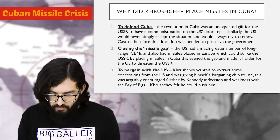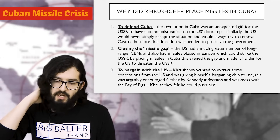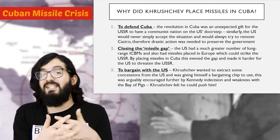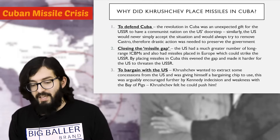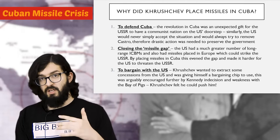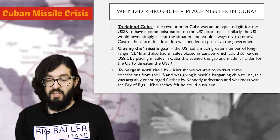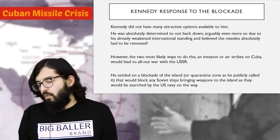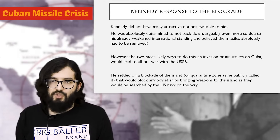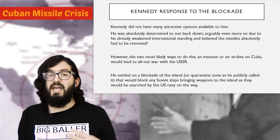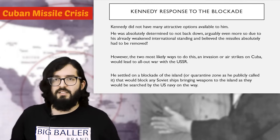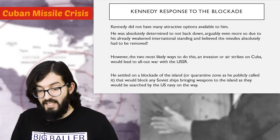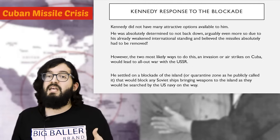The third reason is that Khrushchev wanted to bargain with the USA — to extract concessions by giving himself a bargaining chip. This was arguably encouraged by Kennedy's apparent weakness after the Bay of Pigs incident: Khrushchev thought Kennedy was weak and could be pushed around. When Kennedy finds out about the missiles, it's a really tough situation with few attractive options. He is absolutely determined not to back down — arguably even more so due to his already weakened international standing — and believes the missiles must absolutely be removed. That is a red line.